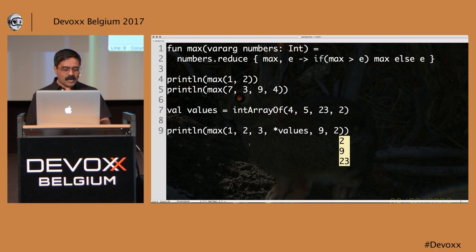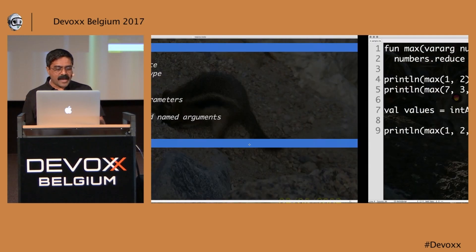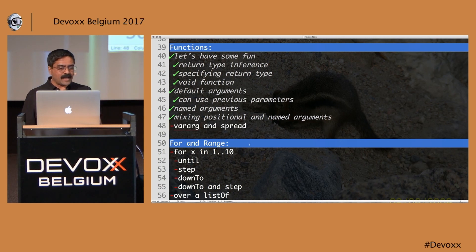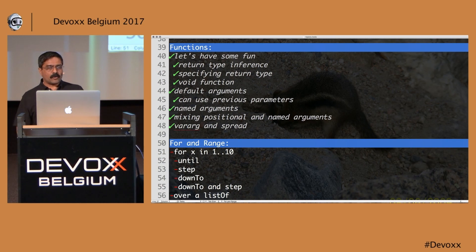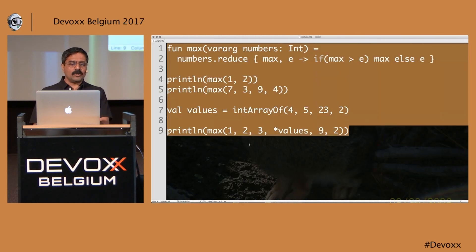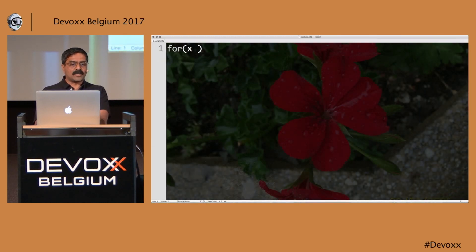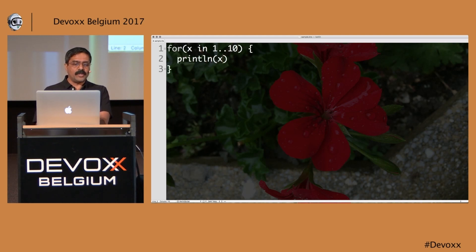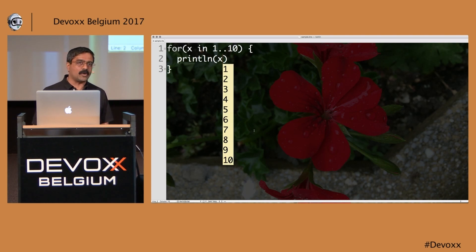That becomes really nice to start programming. We're not spending time on ceremonies — it becomes natural once you learn this syntax. Now let's talk about the traditional for loops, which also become a little bit easier to work with in Kotlin.